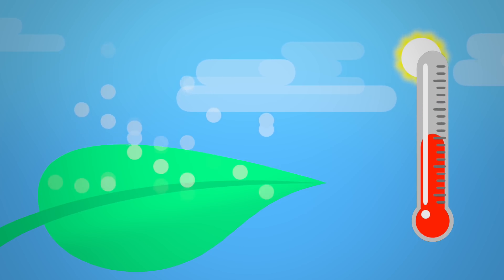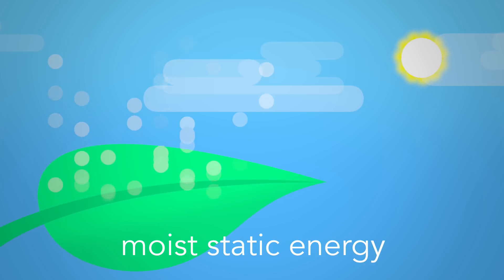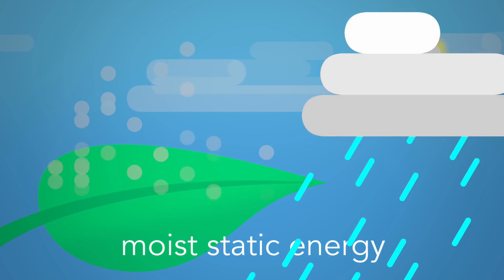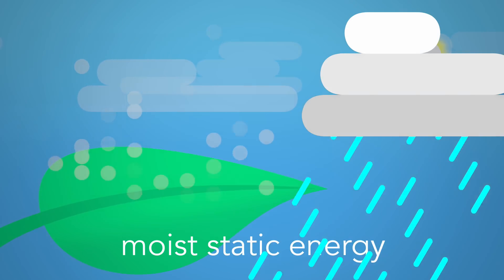The researchers calculated that these effects create a local increase in what is known as moist static energy, which can lead to increased rainfall. Additionally, the increase in water vapor could simply be falling back out as rain in nearby areas.